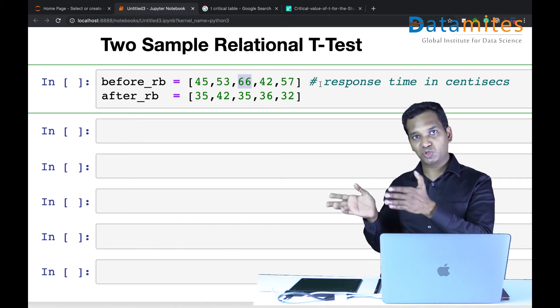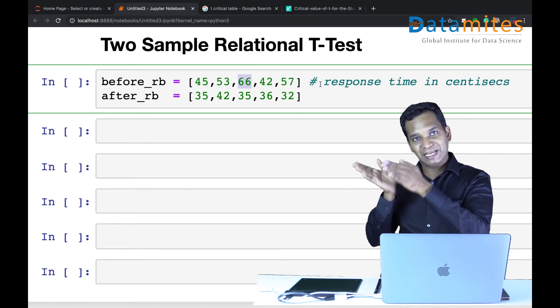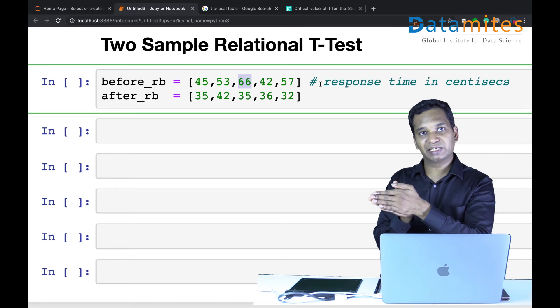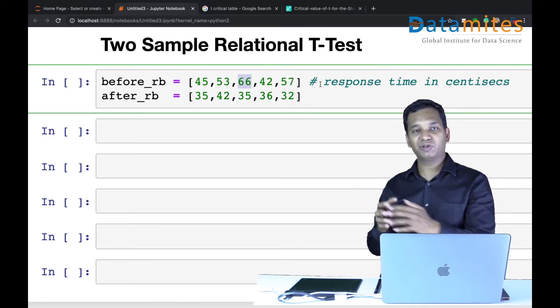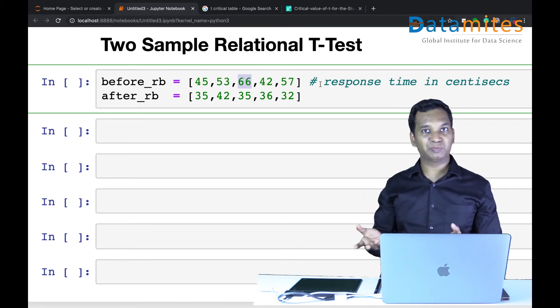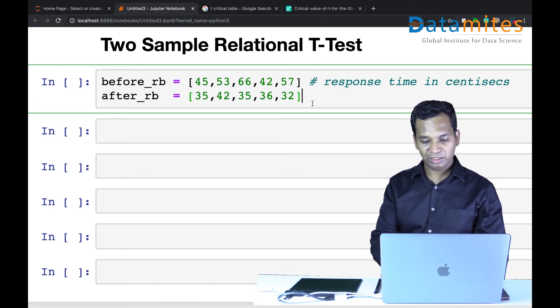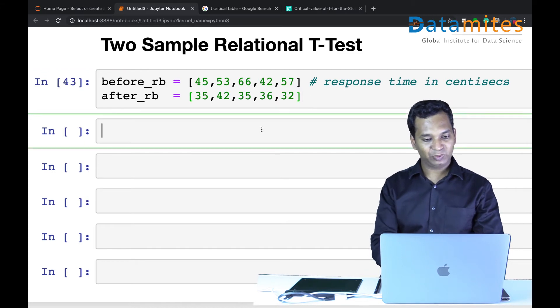It's the same people we have taken data from before the test and after the test. Because it is connected, the same people before and after, we call it relational t-test.